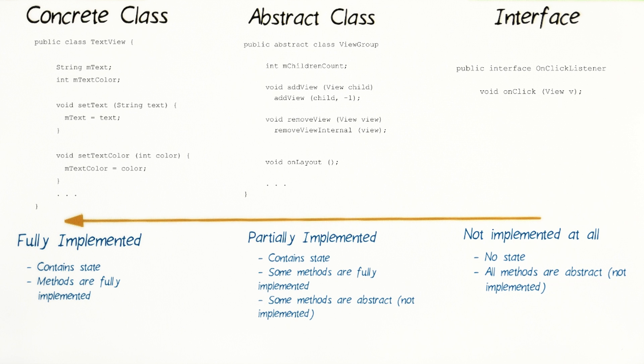So you can think of this as a continuum, where an interface is not implemented at all, an abstract class is partially implemented, and a concrete class is fully implemented.